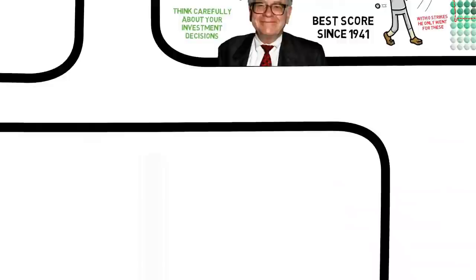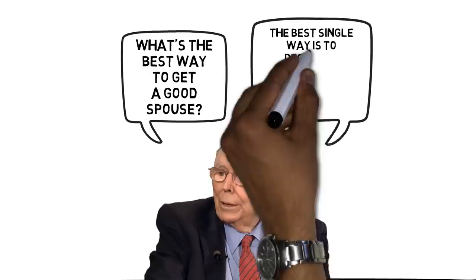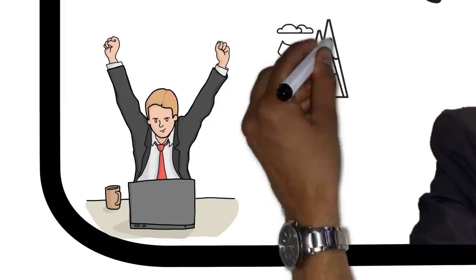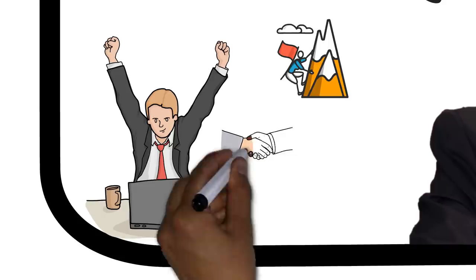Because you are worth it. Charlie Munger said the following: 'What's the best way to get a good spouse? The best single way is to deserve a good spouse, because a good spouse is by definition not nuts.' This is perhaps the oldest trick in the book — and surprise surprise, it works. The best way to get what you want, perhaps even the only way, is to deserve what you want. If you work 14 hours a day to achieve something, treat people well around you, while keeping a long-term mindset, it is almost impossible to miss.